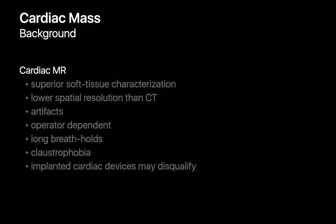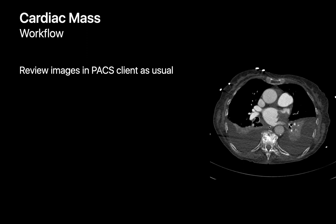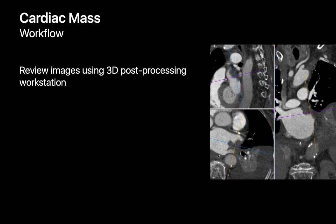Cardiac CT also allows us to study the anatomy immediately around the heart, like other blood vessels and the lungs. The possibility of contrast-induced nephropathy is one downside of cardiac CT. The review of a cardiac mass CT typically begins as a typical chest CT would, looking for lung nodules, lymphadenopathy, and other potentially important findings, followed by the cardiac review on a conventional 3D post-processing workstation.